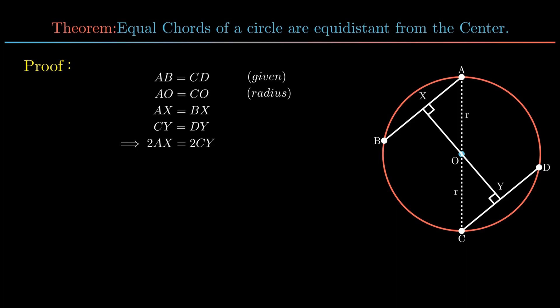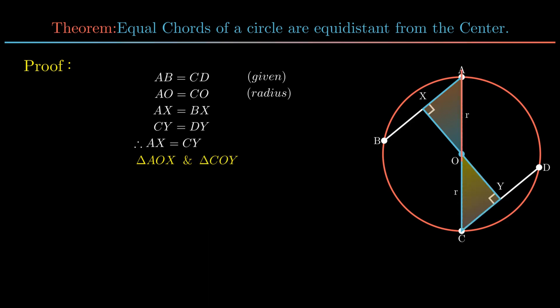As chords are equal we can conclude AX is equal to CY. Now in triangle AOX and triangle COY, side AO is equal to side CO as both are radii. Side AX is equal to side CY.